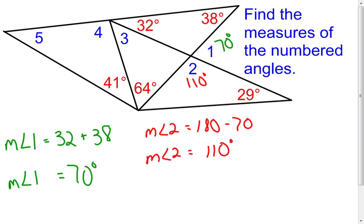Moving on to angle 3 — there are multiple ways to figure this one out. I'll start by finding the measure of a helper angle. I notice that angle 1 and the starred angle are vertical angles, so they have to be congruent. That starred angle is also going to be 70 degrees.